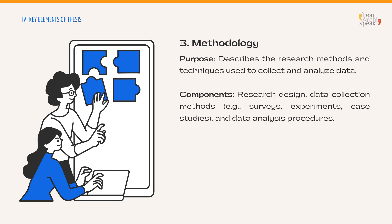Chapter 3 of a thesis, often titled Methodology, is a crucial section that outlines the research methods and procedures used to collect and analyze data. It provides a detailed account of how the research was conducted, ensuring the study is reproducible and the results are credible. Begin by explaining the purpose of the methodology chapter and describe how the chosen methods align with your research question or hypothesis and the overall goals of your study.